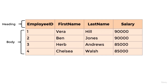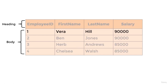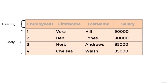Looking at the body of this set, we have a set of four tuples: employee ID 1 (Vera), employee ID 2 (Ben Jones), then Herb, and then Chelsea. SQL attempts to represent tuples as rows in a table, and people sometimes use those terms interchangeably. One important principle of a set is that a set has no duplicates — a duplicate row is one that has all the same values as another row. Currently in this table we have a set of tuples as there are no duplicates.